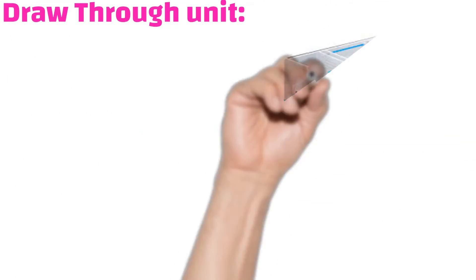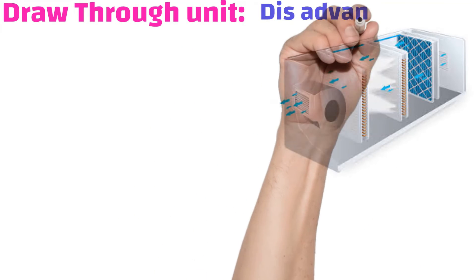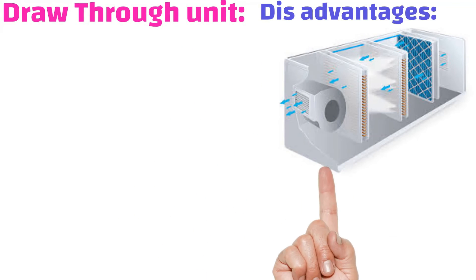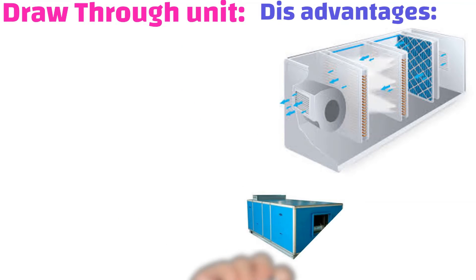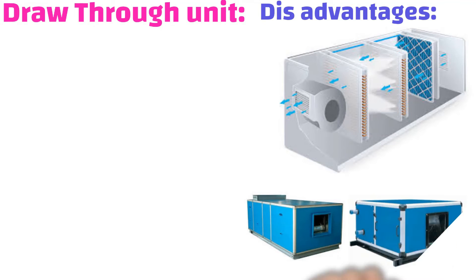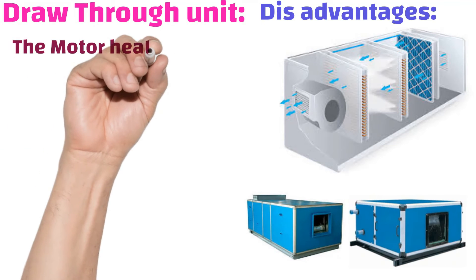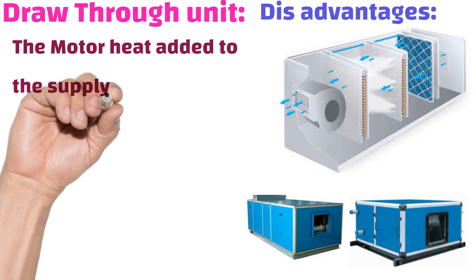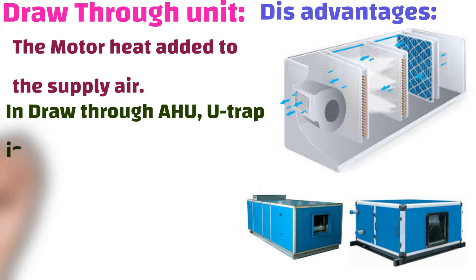Disadvantages of the draw through unit: In draw through AHU, the U-trap is on the negative pressure side. This will lead to smell air being drawn back into the AHU when the U-trap is dried.